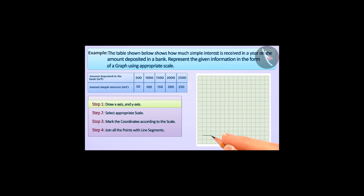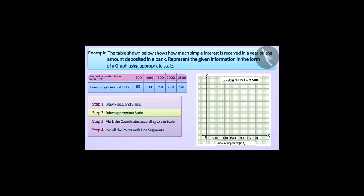First, we draw two perpendicular lines on the graph paper. The horizontal line is the x-axis and the vertical line is the y-axis. As the amount deposited is an independent variable, we will show the amount deposited on the x-axis. We will take 1 unit equals to Rs 500 for the x-axis. Simple interest is a dependent variable, so we will show simple interest on the y-axis. We take 1 unit equals to Rs 50 for the y-axis.